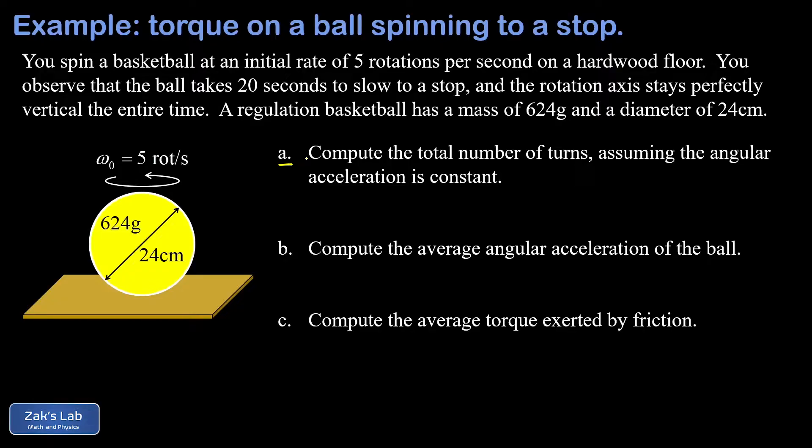In the first question we want the total number of turns for the ball, assuming the angular acceleration is constant. One of the cool things about this question is that we don't even have to switch into SI units for the rotational velocity—we can actually work in rotations per second, so I want to illustrate how that works.